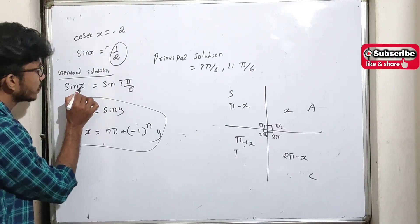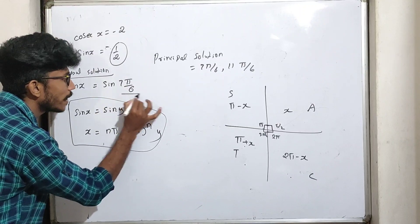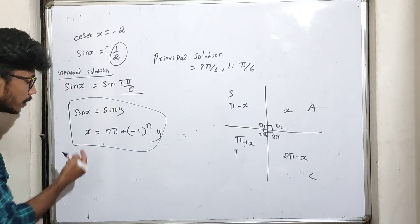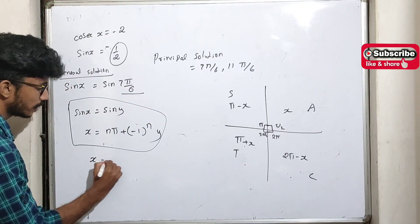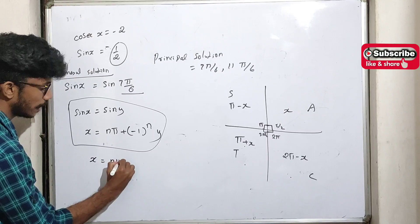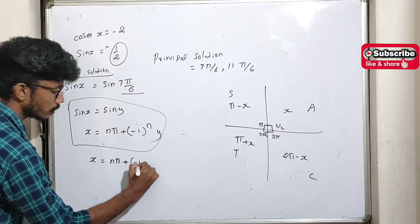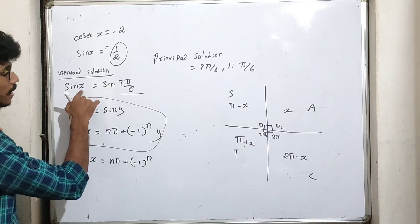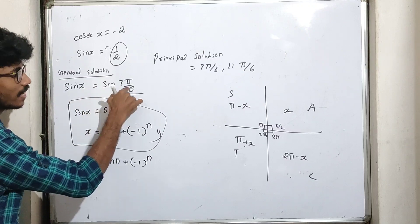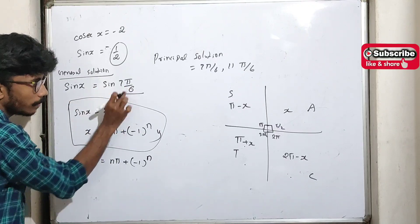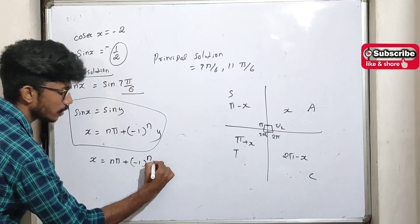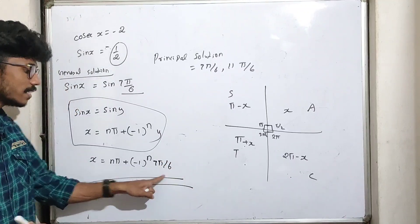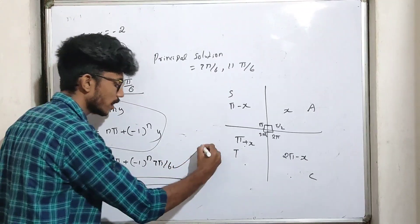Which means if sin x equals sin y, then y equals 7π/6 (as our reference). So x equals nπ + (−1)^n · (7π/6). This is the general solution.